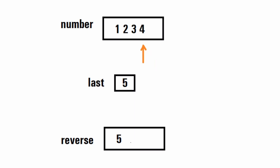After processing digit 5, I remove it from the number, so the last digit is now 4. We follow the same process: store 4 into 'last', multiply reverse (which is 5) by 10 to get 50, then add 4 to get reverse as 54. We remove 4 from the number. The next digit is 3, which we store in 'last'. Multiply reverse by 10 to get 540, then add 3 to get 543.